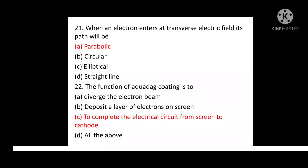Question No. 21: When an electron enters a transverse electric field, its path will be? Option A: Parabolic. Option B: Circular. Option C: Elliptical. Option D: Straight Line. Correct answer is Option A: Parabolic.